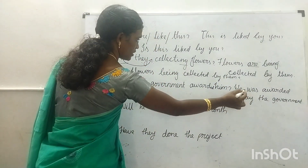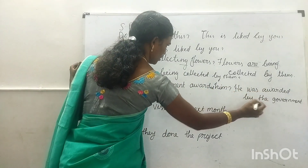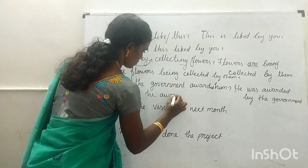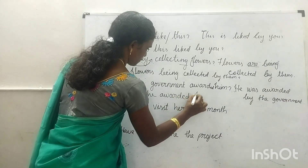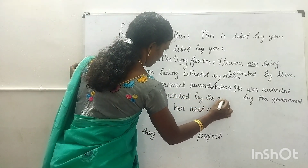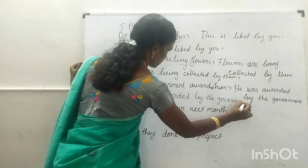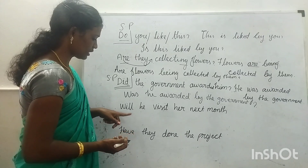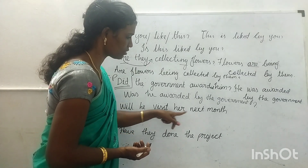The passive statement is 'He was awarded by the government.' Now bring the 'be' form outside to make the question. The answer is: 'Was he awarded by the government?' That is your simple past passive question type.